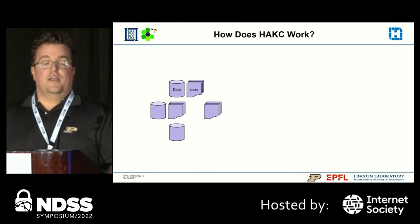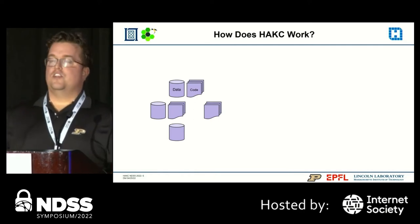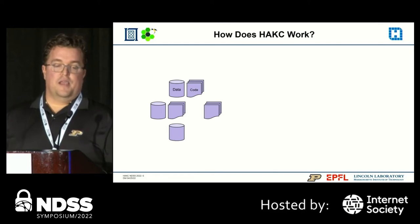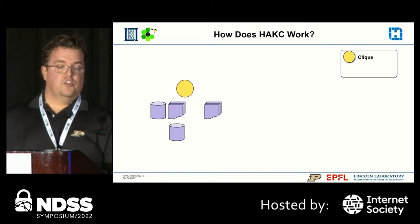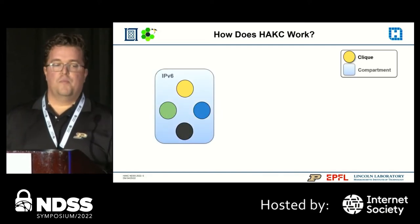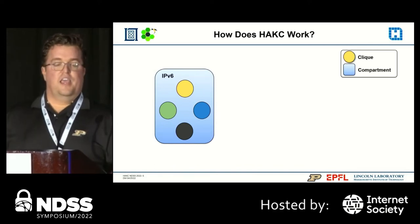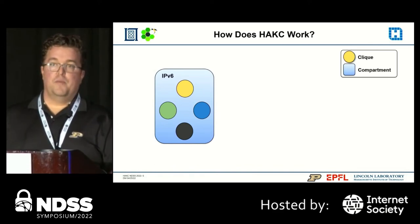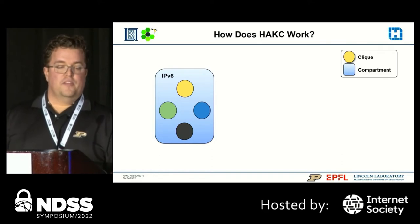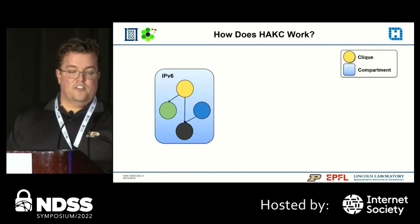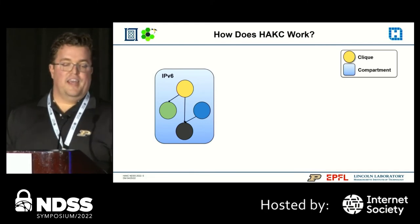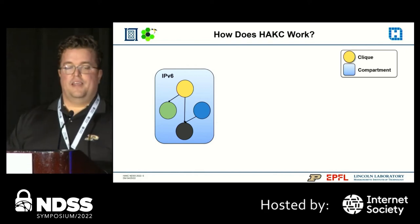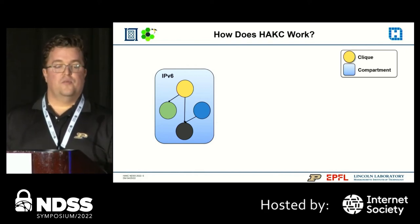HACKS works by reading a compartmentalization policy provided by the developer that combines code and data into a structure we call a click. A set of clicks is further bundled into another structure called a compartment. Each click is assigned a color unique to the compartment, but not globally unique. Additionally, the compartmentalization policy defines an access control policy for each click. In this case, the yellow click can access yellow, green, and black data, while green can only access its own data.